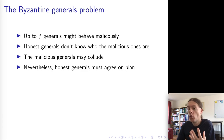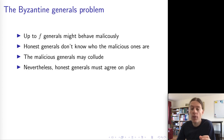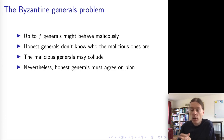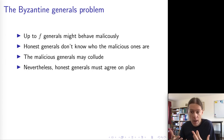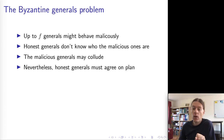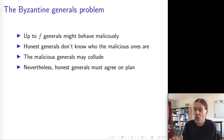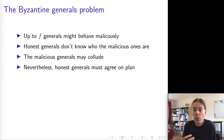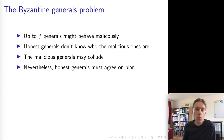The honest generals don't know who the malicious generals are, but we assume some maximum number of generals being malicious. Let's say up to f generals are malicious out of n generals in total. The malicious generals may know who each other are and might work together in a coordinated fashion to deceive the honest generals. Our requirement is that the honest generals agree on a plan — specifically, that they all attack on the same day.